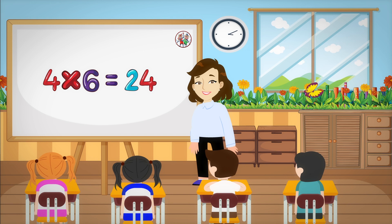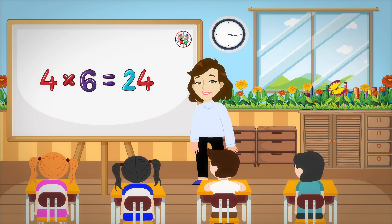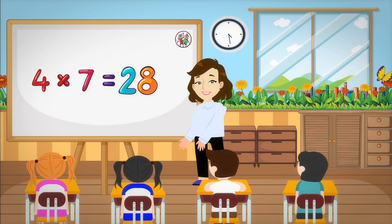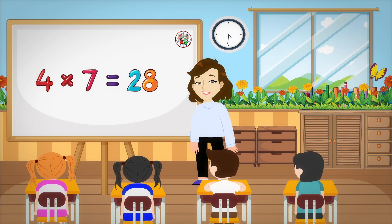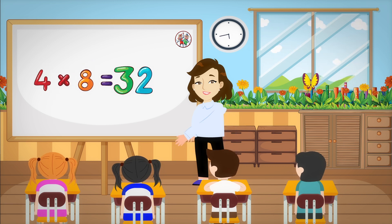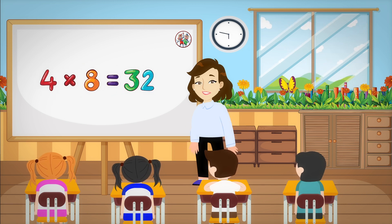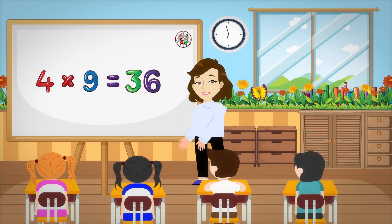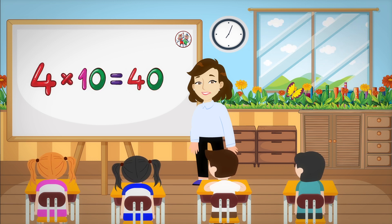Four, six's a twenty-four. Four, six's a twenty-four. Four, sevens are twenty-eight. Four, eights are thirty-two. Four, nines are thirty-six. Four, nines are thirty-six.